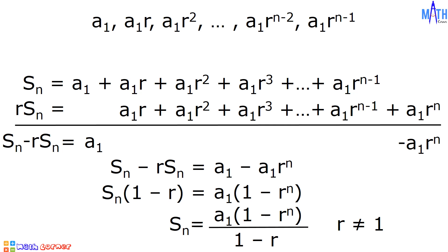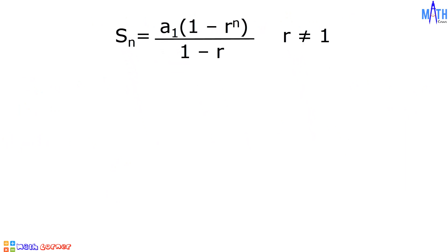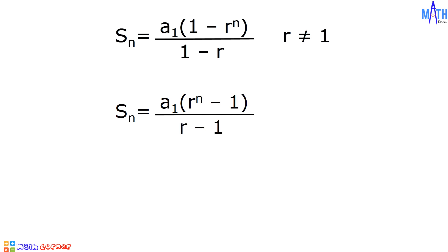This is where R is not equal to 1. This formula is equivalent to S sub n equals A sub 1 times the quantity R raised to n minus 1, all over R minus 1, where R is not equal to 1. These are the two formulas that we can use in finding the sum of the terms of a finite geometric sequence.